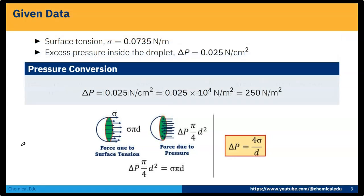Now here the given data: first, surface tension is given, so that is sigma equals 0.0735 Newton per meter, and excess pressure inside the droplet, that is del P, is 0.025 Newton per centimeter square.